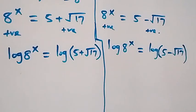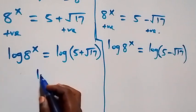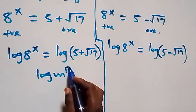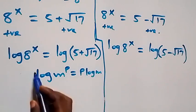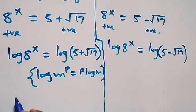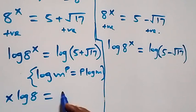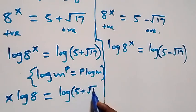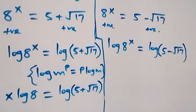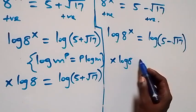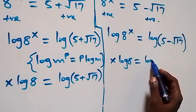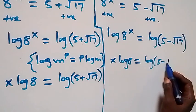Applying the power rule of logarithm — that is, log m raised to power p equals to p log m — the power here is x. So we have x log 8 equals to log (5 plus root 17). And the same thing applies to the second equation: x log 8 equals to log (5 minus root 17).